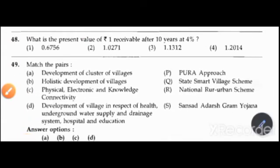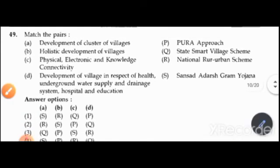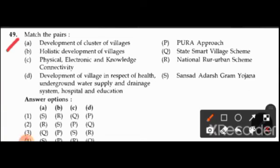Question 48: What is the present value of rupees 1 receivable after 10 years at 4 percent? Options are 0.6756, 1.0271, 1.1312, or 1.2014. The right answer is option 1: 0.6756.